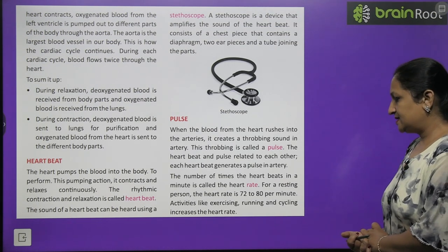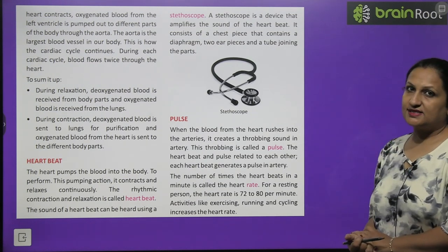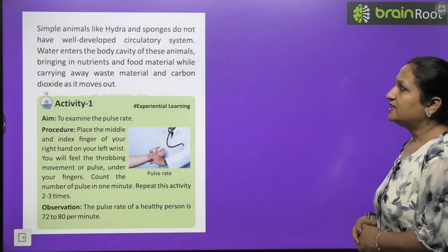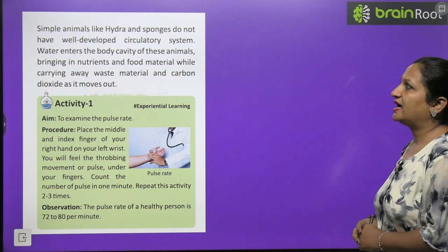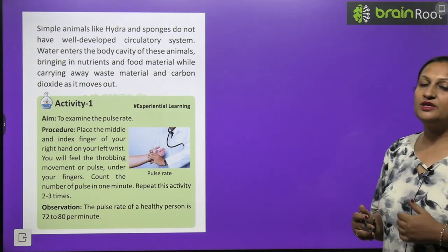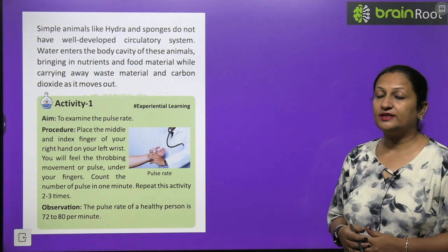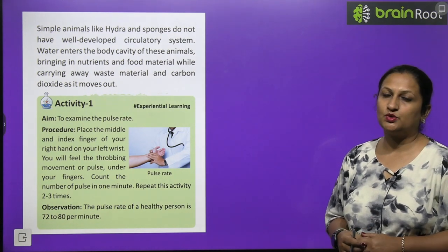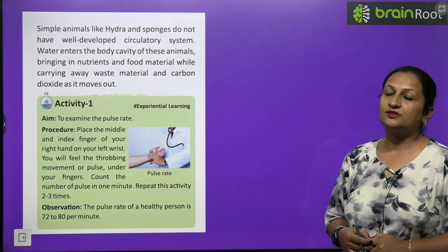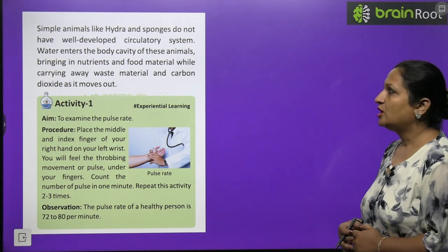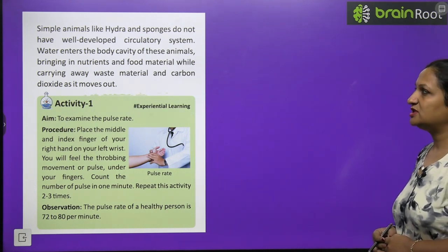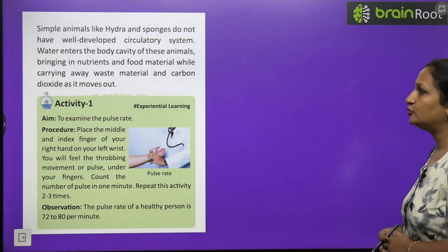Activities like exercising, running, and cycling increase the heart rate. Simple animals like hydra and sponges do not have a well-developed circulatory system — though multicellular, they are very simple organisms. Water enters their body cavity, bringing in nutrients and food material while carrying away waste and carbon dioxide.